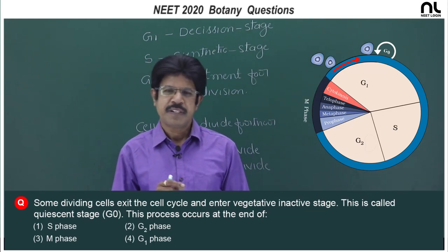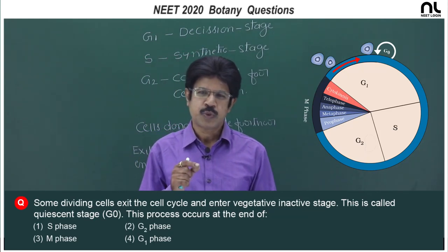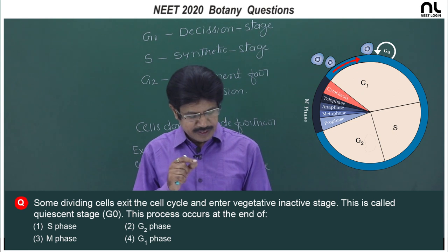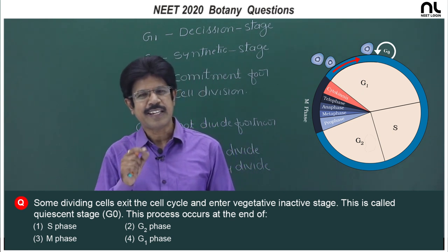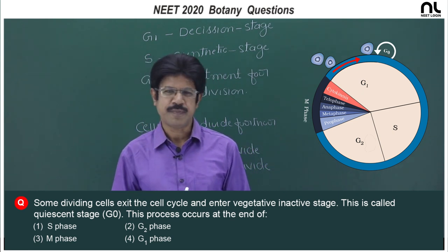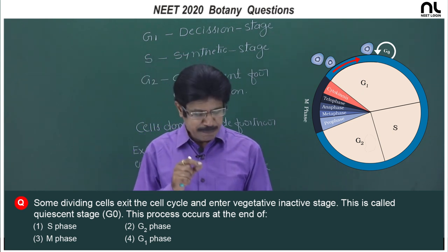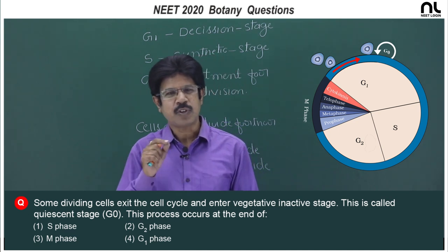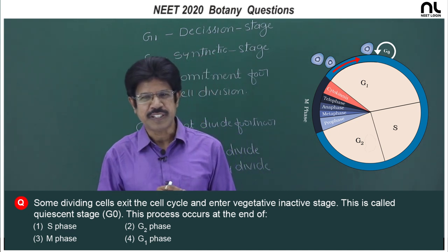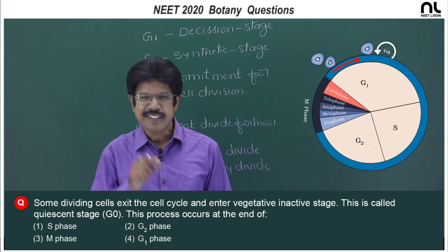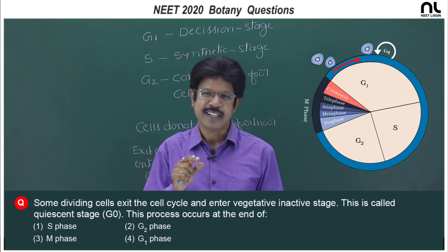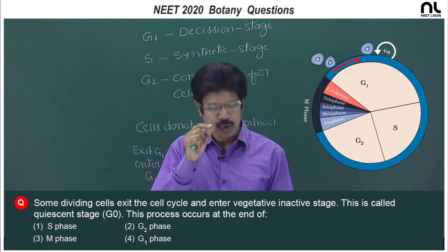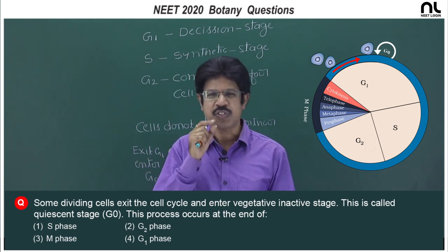This question appeared in 2020 NEET, from the topic of cell cycle and cell division. It appears to be with ambiguity, but it is not. It is tricky with intricacy as per the cell division topic and the question concerned.